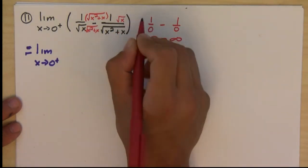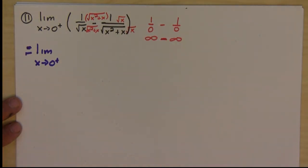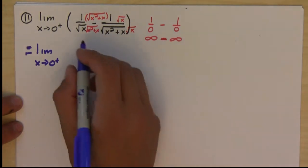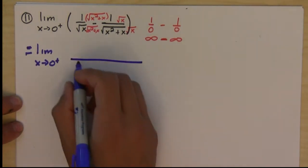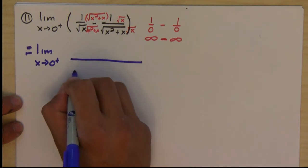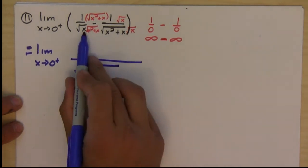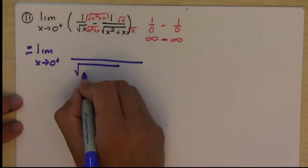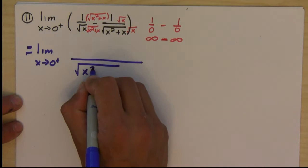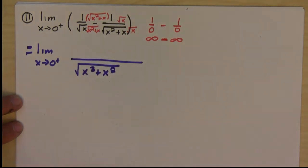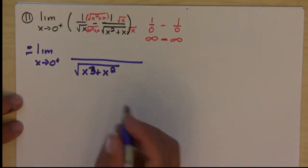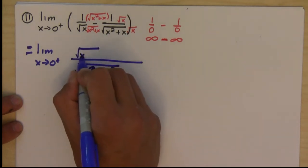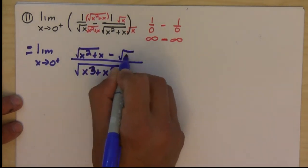And this fraction, the second one, is going to need a square root of x. So if I combine those two, I'm going to have one fraction. Since they're both under the square root, I can just bring the x inside. So if I multiply the x inside, I would have x cubed plus x squared. And then on top, I'm going to have x square root of x squared plus x minus square root of x.